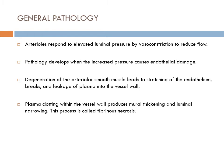General pathology: arterioles respond to elevated pressure by vasoconstriction to reduce blood flow. Pathology develops when increased pressure causes endothelial damage. Long-standing elevated blood pressure leads to vasoconstriction, endothelial damage, and degeneration of arteriolar smooth muscle. Stretching of the endothelium causes breaks and leakage of plasma into the vessel wall, leading to plasma clotting within the vessel wall, producing intimal thickening and luminal narrowing — a process called fibrinous necrosis.